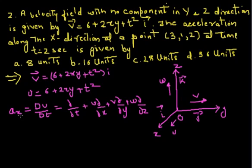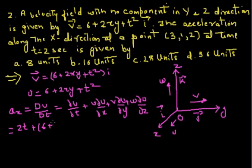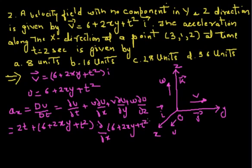To find ax we apply this operator to u. So ax = ∂u/∂t + u·∂u/∂x + v·∂u/∂y + w·∂u/∂z. Differentiating u with respect to t gives 2t. Then u·∂u/∂x: u = (6 + 2xy + t²) and ∂u/∂x = 2y, so this term is (6 + 2xy + t²)·2y. Since v = 0 and w = 0, the last two terms vanish. The equation reduces to ax = 2t + (6 + 2xy + t²)·2y.